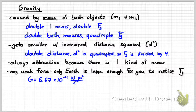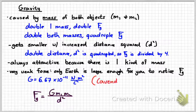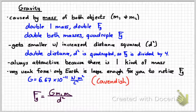The constant G, 6.67 times 10 to the negative 11, is a very small number. Remember, that was measured by Mr. Cavendish, and you do need to know the Cavendish experiment.